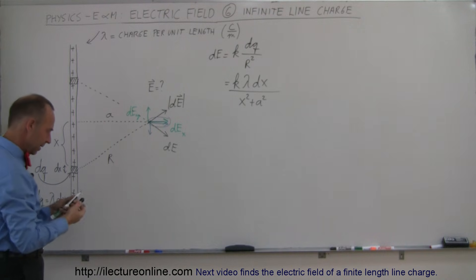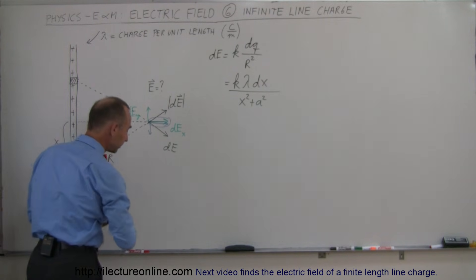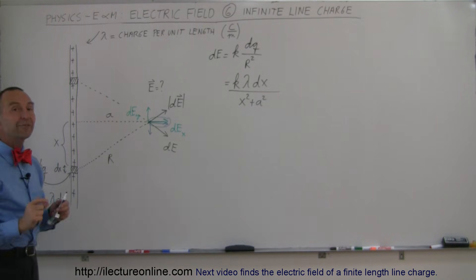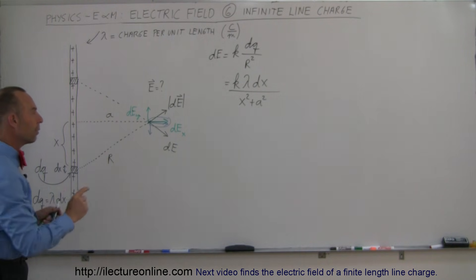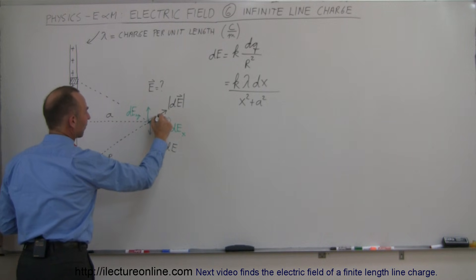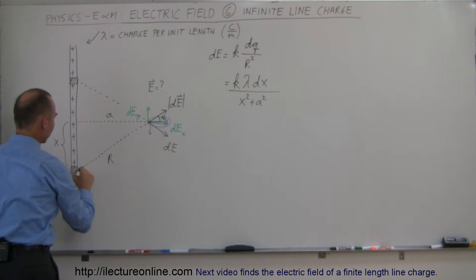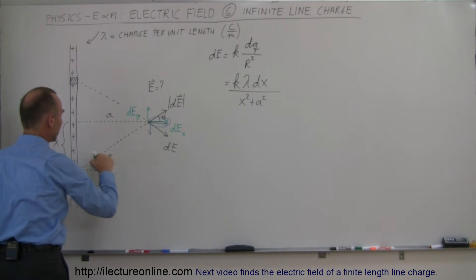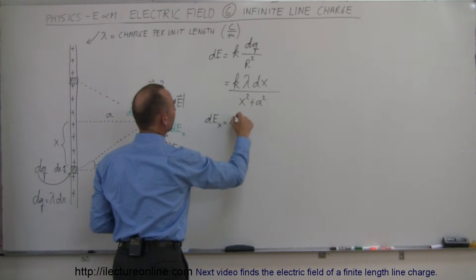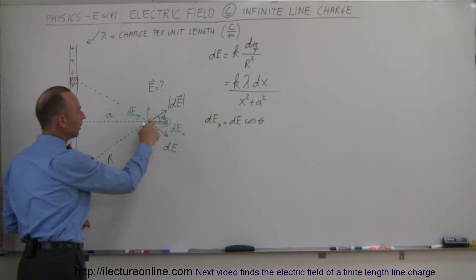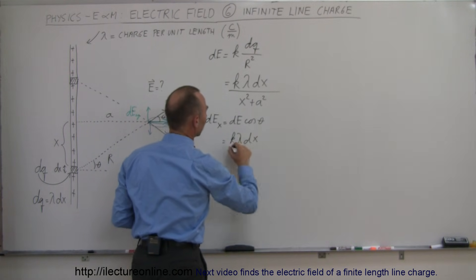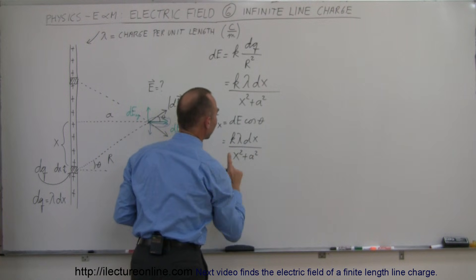By now you've probably figured out that we're going to do some sort of integration by summing up all these small segments with small DQs on them. So now what we need to do is find out how big the DEX component is relative to DE. We have an angle right here, which is theta — the same angle as this angle right here, theta. So to find the DEX component, we can say that DEX is equal to DE times the cosine of that angle, because it's the adjacent side. So that means this is equal to K times lambda times DX divided by X squared plus A squared, times the cosine of theta.